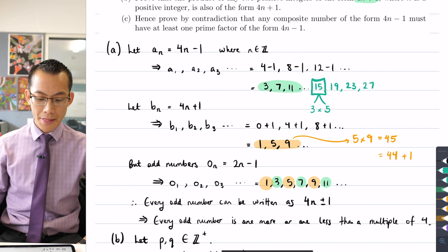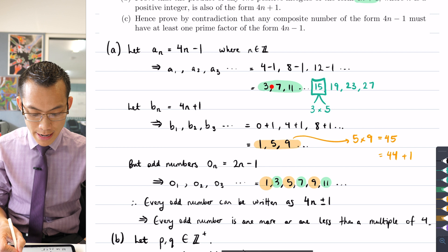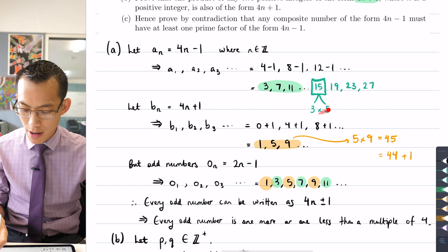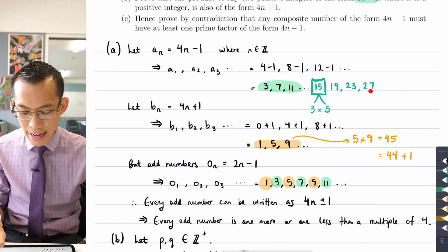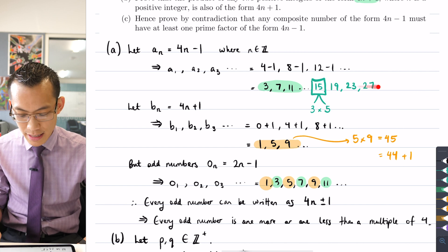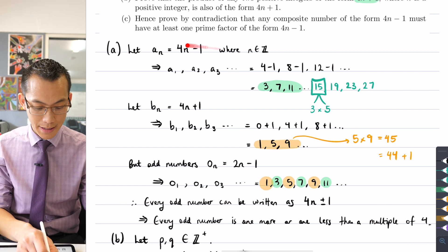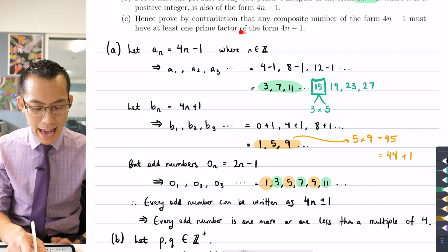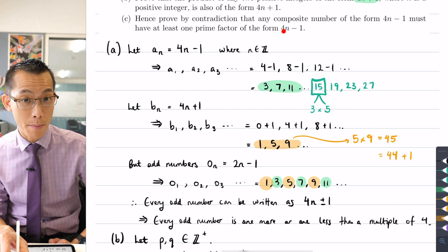You can see 27, that's 3 times 9, so 3 I've already picked out, and I could keep on going. Any time I go along in this sequence, this part C, this result I'm trying to prove, is that at least one of the factors will be the 4n minus 1 format.